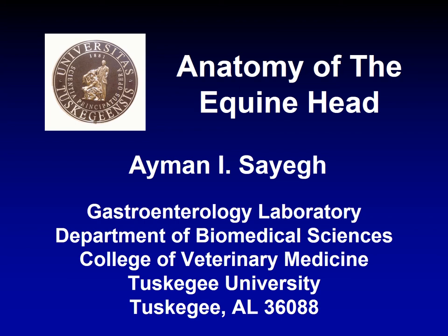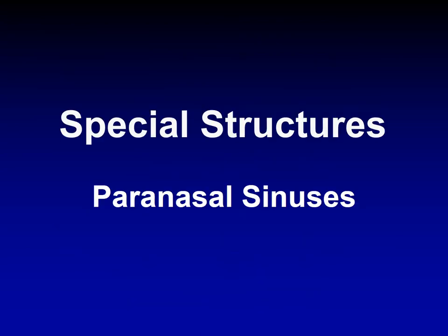Welcome back to the equine anatomy course. We started talking about the anatomy of the equine head. We talked first about some external features on the equine skull, then we moved and talked about some internal features, especially the nostrils and nasal cavities and all the concha and all the meatuses. This time we will be talking about the paranasal sinuses.